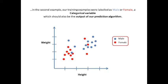In the second example, our training examples were labeled as male or female, a categorical variable, which should also be the output of our prediction algorithm.